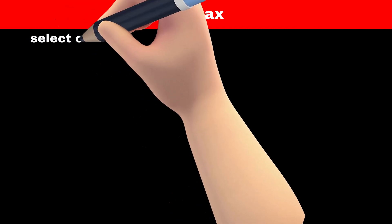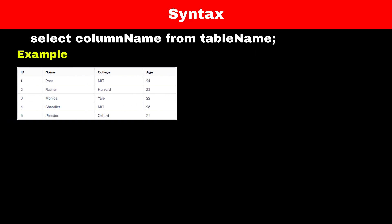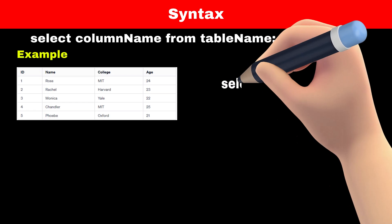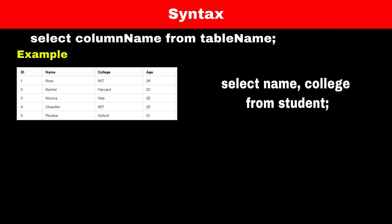To perform this operation, we can use a simple command that says: SELECT column_names FROM table_name. For example, if you want to read the name and college of a student from the student table, then we will write our command as: SELECT name, college FROM student. This will give you the name and college of all the students from the student table.